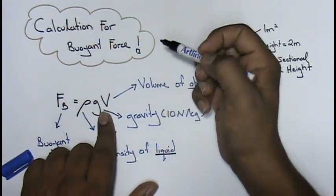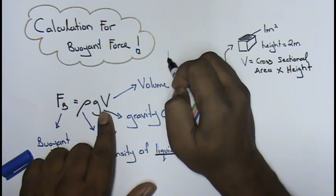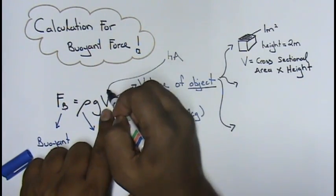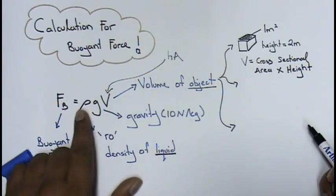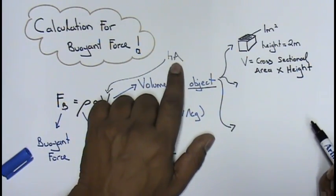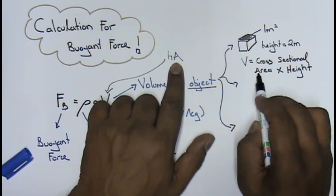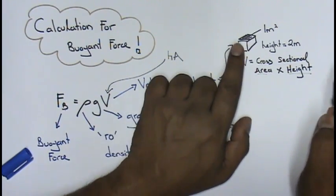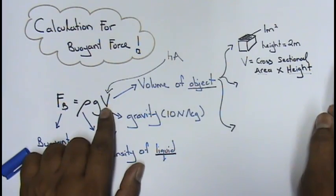You can even put over here H A. The V over here can be replaced with H A. That means you call it rho G H A over here. A is basically the cross-sectional area and H over here stands for the height. So this is one way how they can ask you for the volume of object.